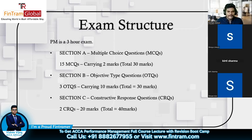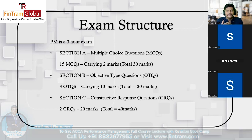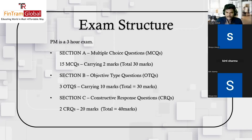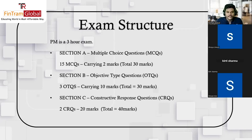Section C requirements can involve both calculations and theoretical aspects. There are two CRQs in Section C, each carrying 20 marks, giving a total of 40 marks. So 30 plus 30 plus 40 gives you a total of 100 marks — that's the exam structure of the PM paper. If anyone has questions about this, feel free to unmute yourself or use the chat box.